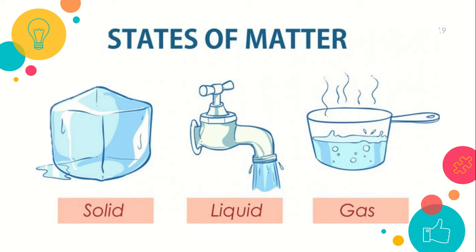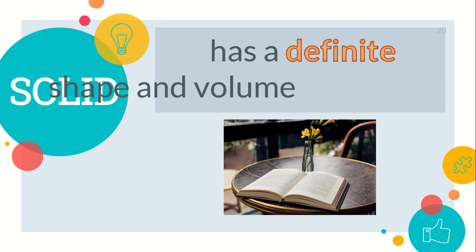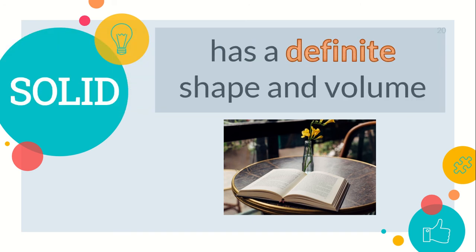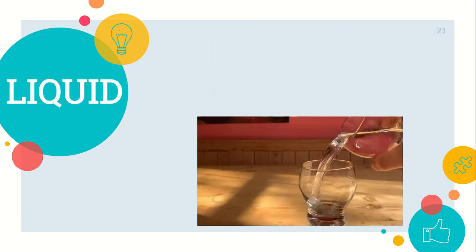We will start with solid. Examples of solid include a book, a table, a chair, and a flower. Solid has definite shape and volume, meaning solids maintain their shape and volume even if you transfer them to another container. Solids do not flow easily, unlike liquids and gases.